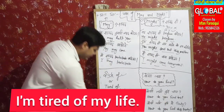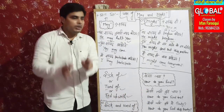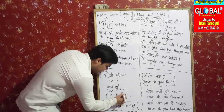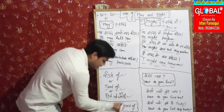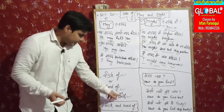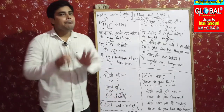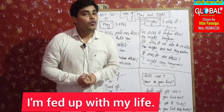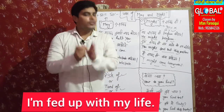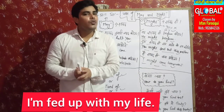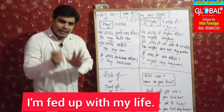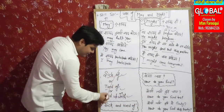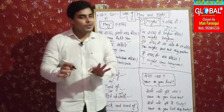Similarly, 'tired of' — 'I am tired of my life.' And 'fed up' — note that 'fed up' takes the preposition 'with,' not 'of.' This is important. So: 'I am fed up with my life.' I'm signaling it like a sign — it's important.